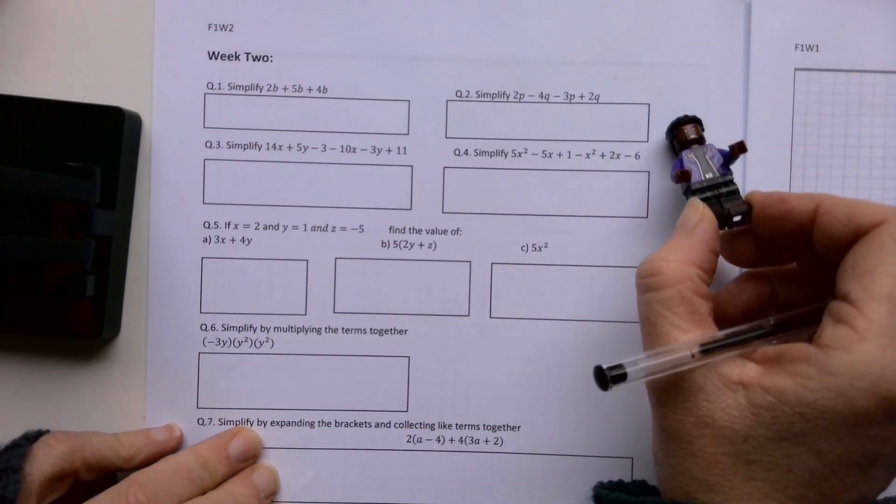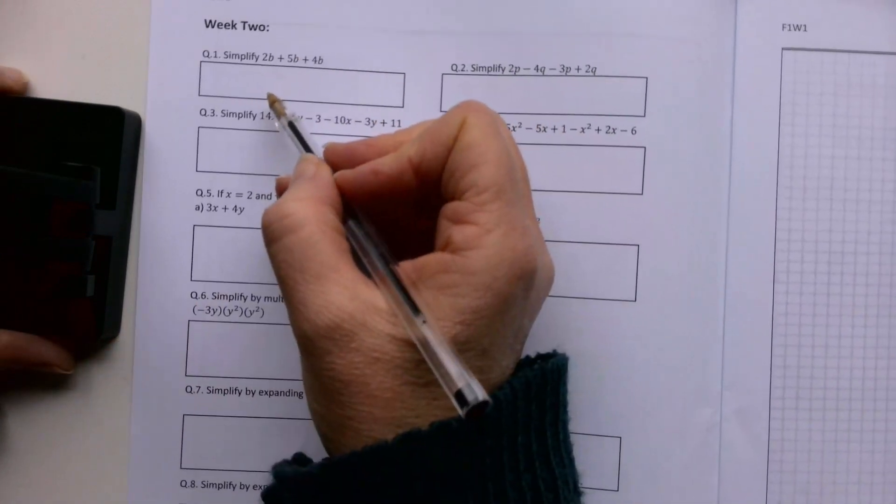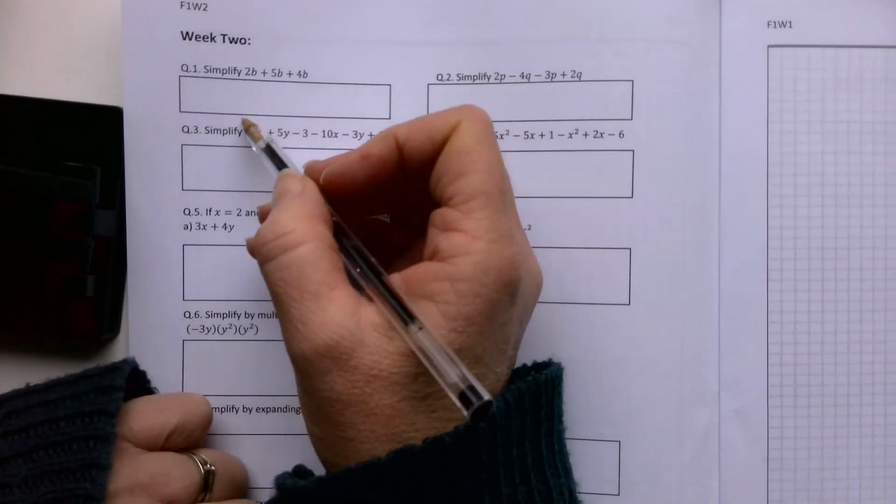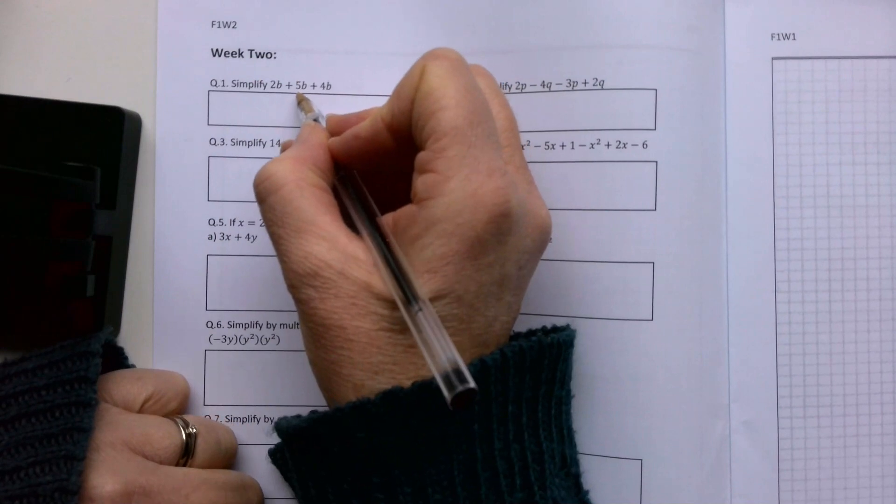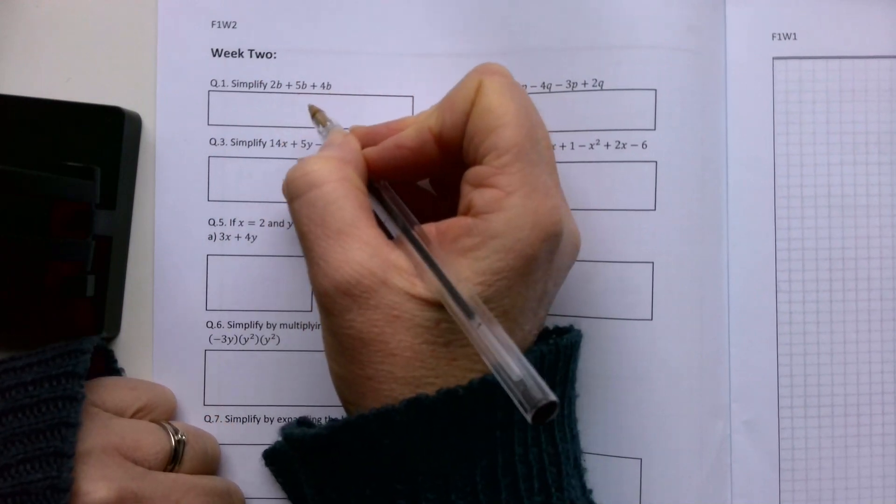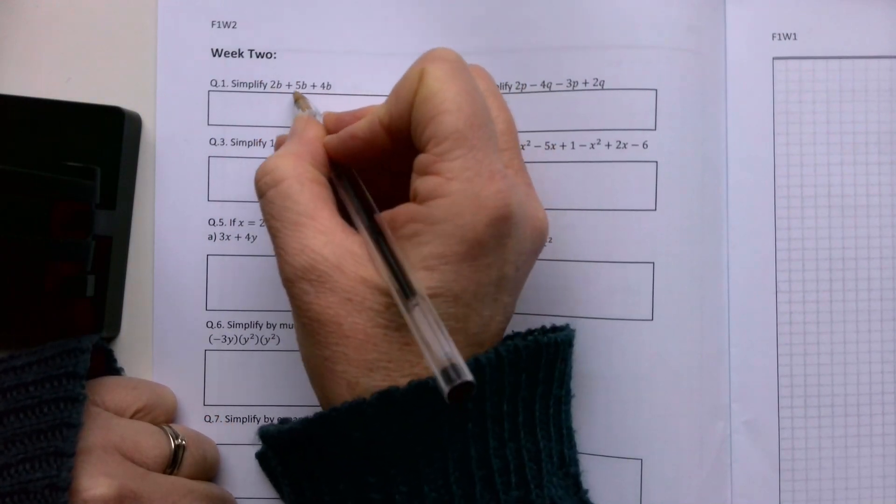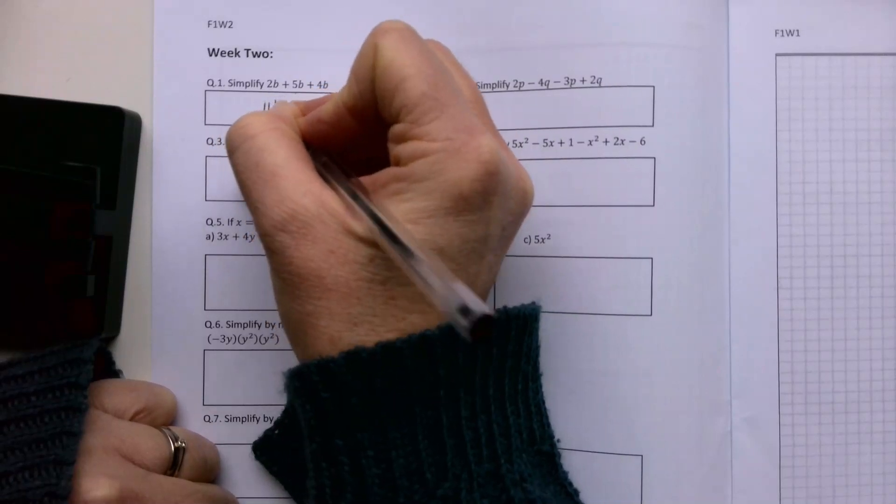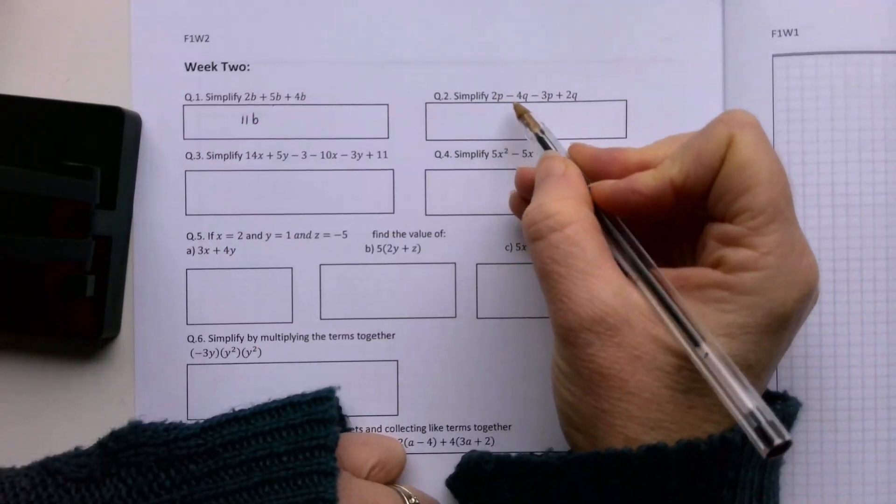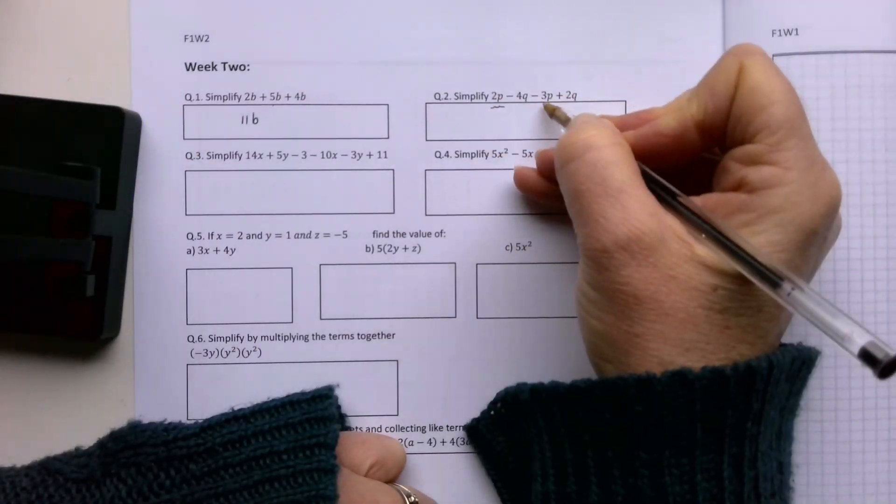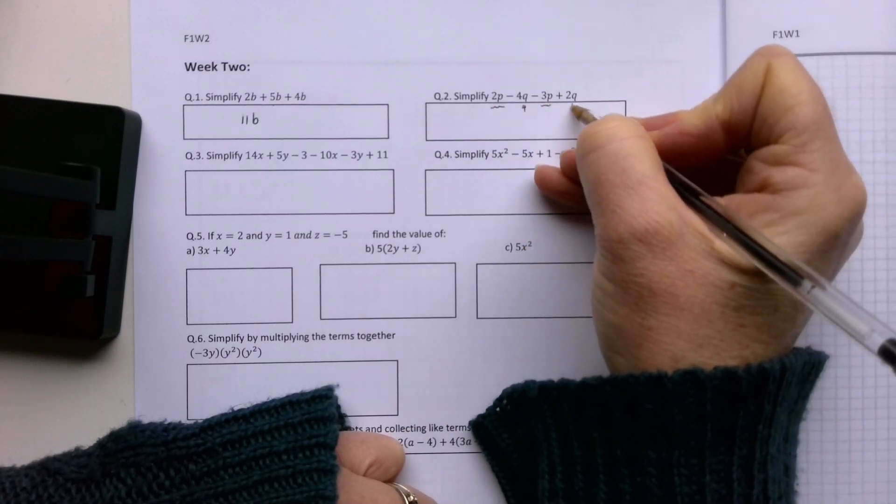Simplify - look, last week simplify just means add together what can go together. 2b and 5b and 4b can all go together because they're all the same kind of thing. So 2 and 5 is 7, and 4 is 11: 11b. Simplify again - p's can go together and q's can go together. 2p minus 3p is minus p. Minus 4q plus 2q is minus 2q.